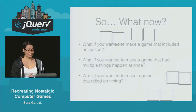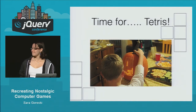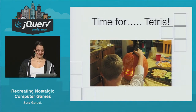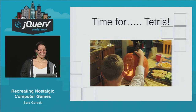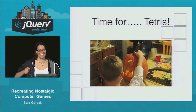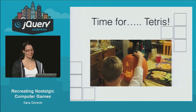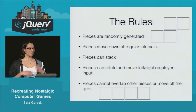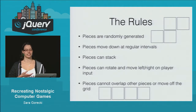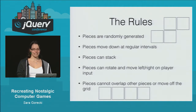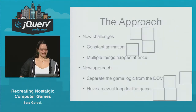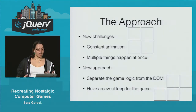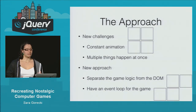So I decided it was time for Tetris. Pretty much everyone has played Tetris — pieces are added, pieces fall, rows are removed, pieces rotate. It's one of those classic games we all know and love. But this brought in a lot of new challenges for actually building a game: there's constant animation, things are always moving, and multiple things happen at once — pieces are falling down and can rotate and move left and right at the same time.